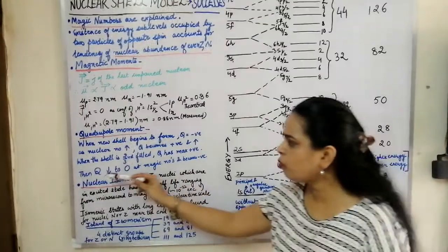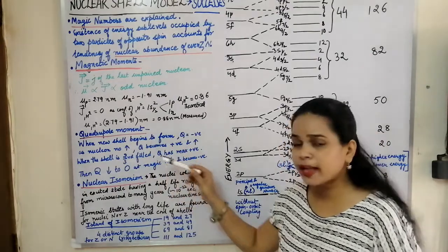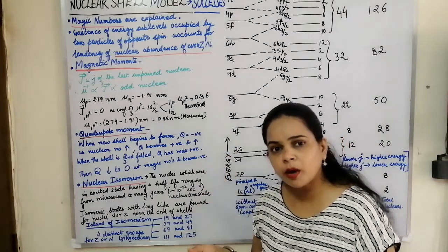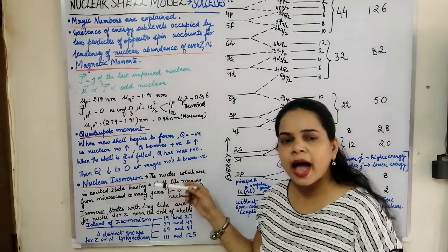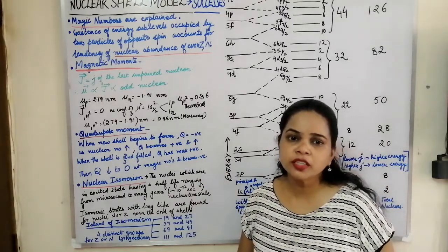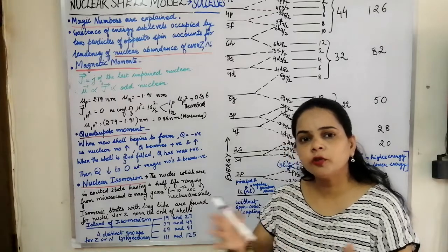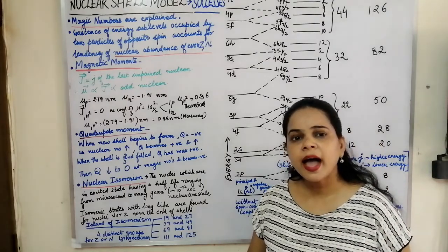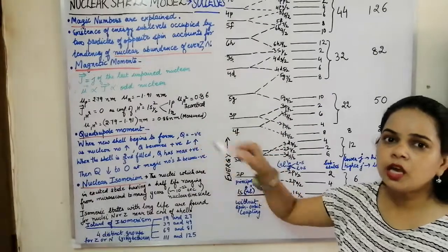At Q = 0, the shells are filled with nucleons equal to the magic numbers. At the magic numbers, the electric quadrupole moment of the nucleus is zero and it has a perfectly spherical shape. This accounted for the quadrupole moment and the change in shape of the nucleus — the nuclear shell model was very successful in explaining the quadrupole moment, where the shape of the nucleus could change from oblate to prolate to spherical symmetricity, taking a spherical shape when the nucleon number matches the magic numbers.